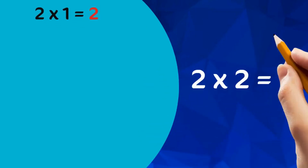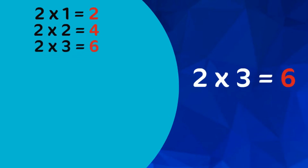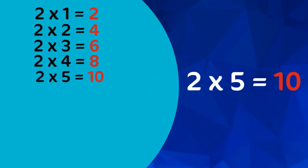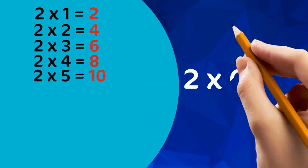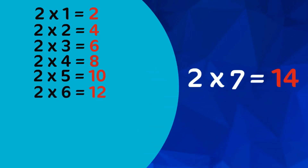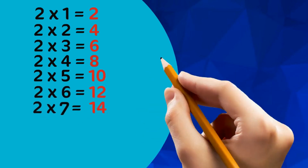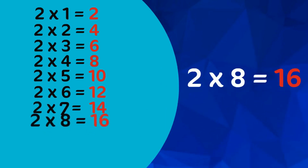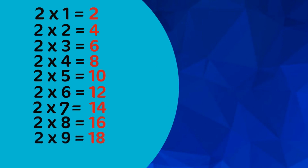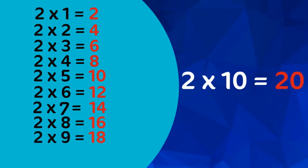2 1s are 2, 2 2s are 4, 2 3s are 6, 2 4s are 8, 2 5s are 10, 2 6s are 12, 2 7s are 14, 2 8s are 16, 2 9s are 18, 2 10s are 20.